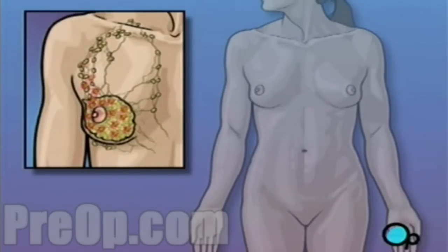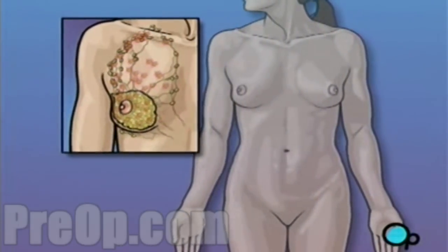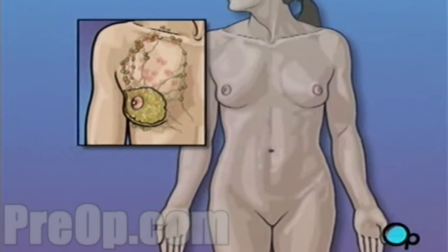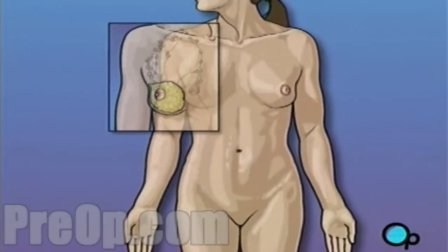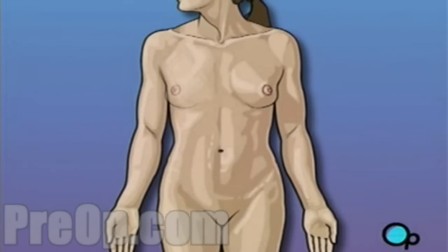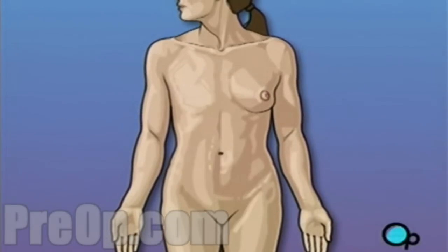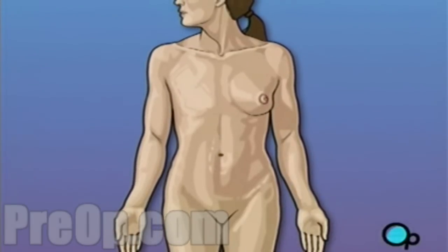Your doctor has recommended that you undergo a modified radical mastectomy because the cancer in your breast may have begun to move into the lymph nodes under your arm as well as into your chest muscle. This procedure will permanently change the outward shape and appearance of your chest, so make sure that you ask your doctor to carefully explain the reasons behind this recommendation.